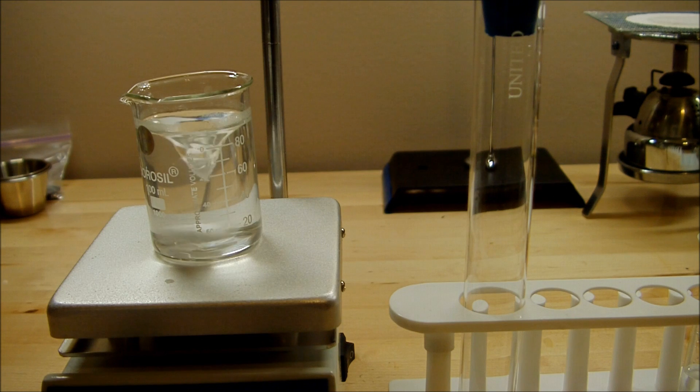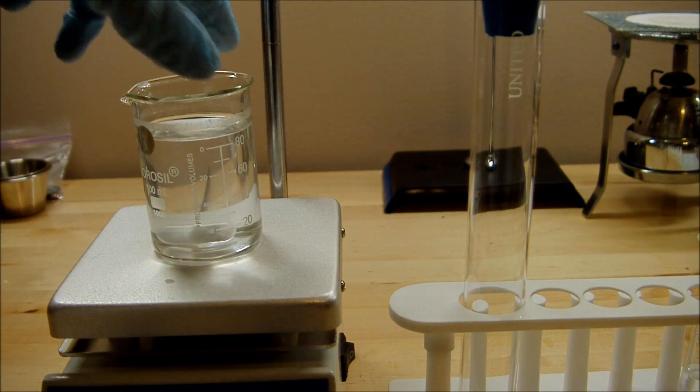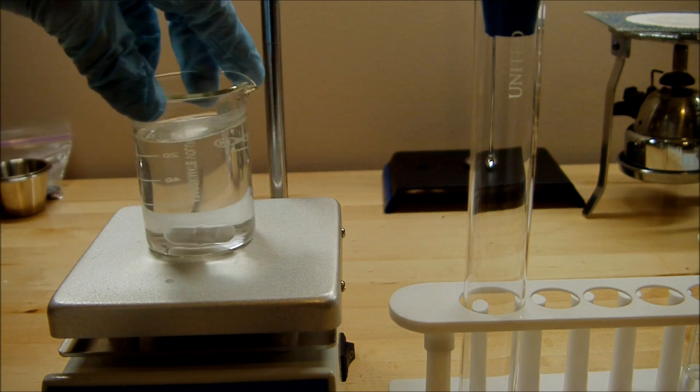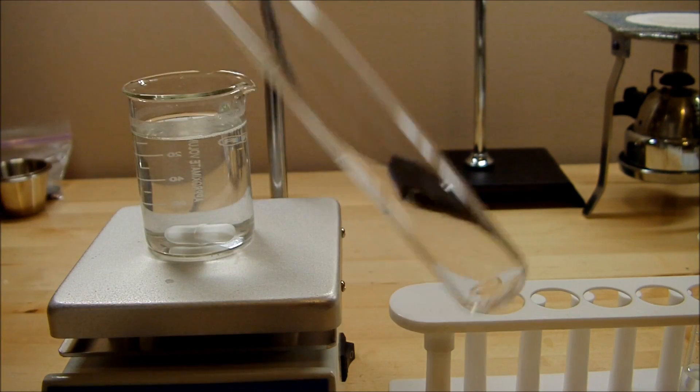Now everything's been dissolved completely and the solution's cleared up. So I'll turn off the heat and the stirring, and then we'll pour it into this jumbo test tube that I have here. And this will be the container for the storm glass.